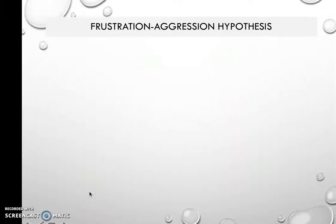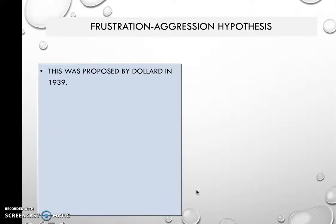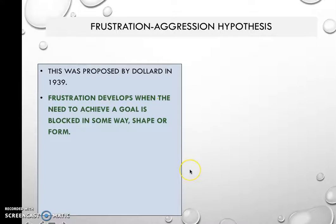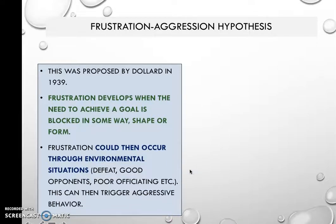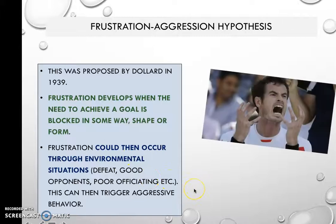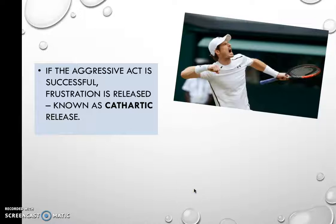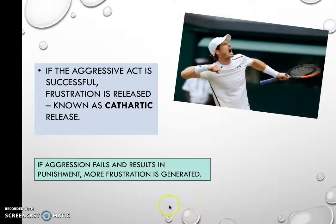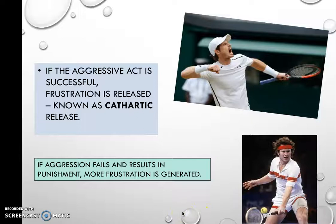Then there is the frustration-aggression hypothesis, proposed in 1939. Frustration develops when we need to achieve a goal but are blocked in some way — by an environmental situation, being defeated by a good opponent, or poor officiating — which triggers aggressive behaviour. If the aggressive act is successful, frustration is released in a cathartic release. But if aggression fails and is punished, more frustration builds. John McEnroe was a very famous example of becoming frustrated and then aggressive whilst playing.